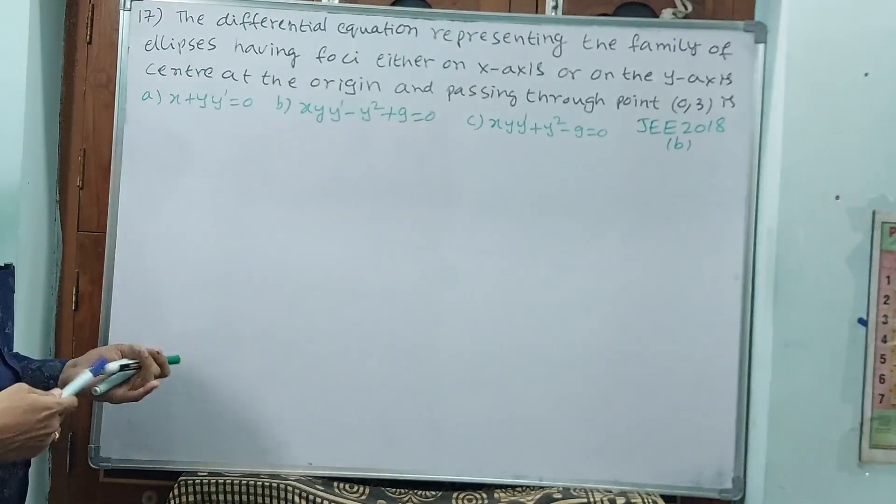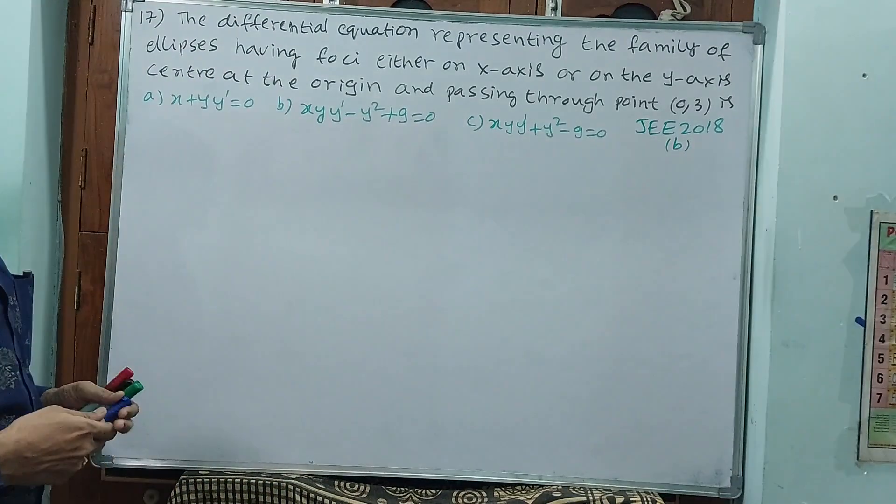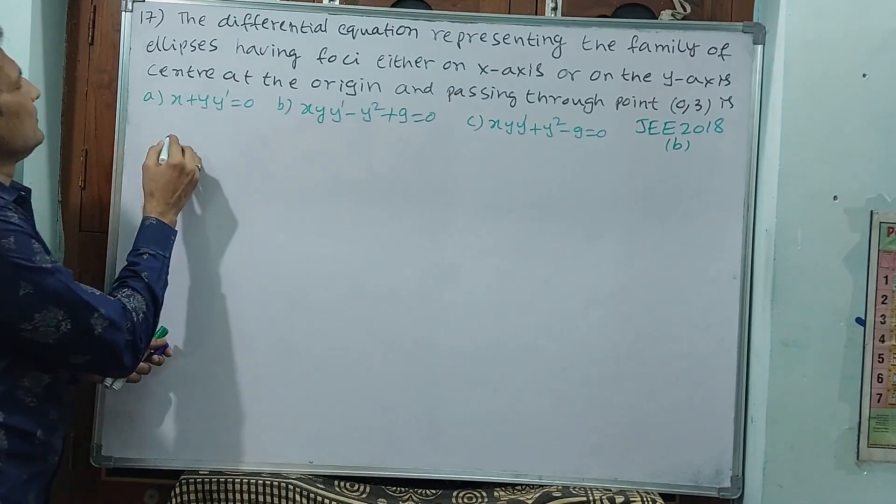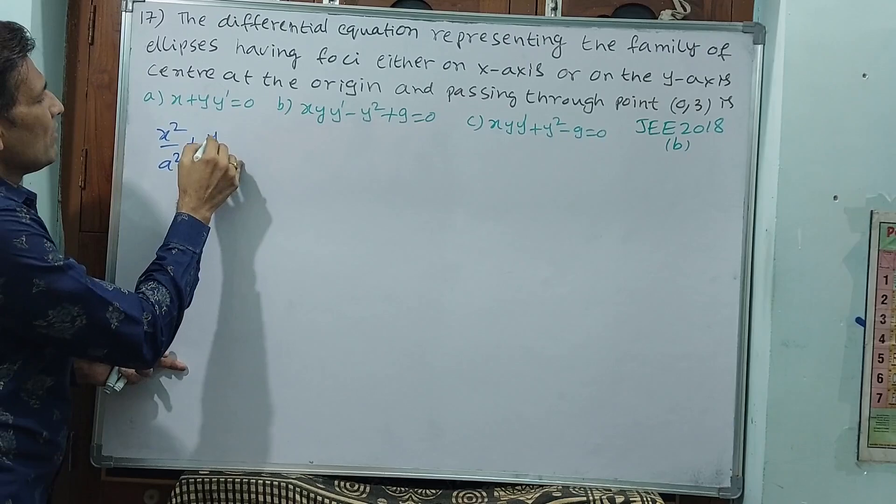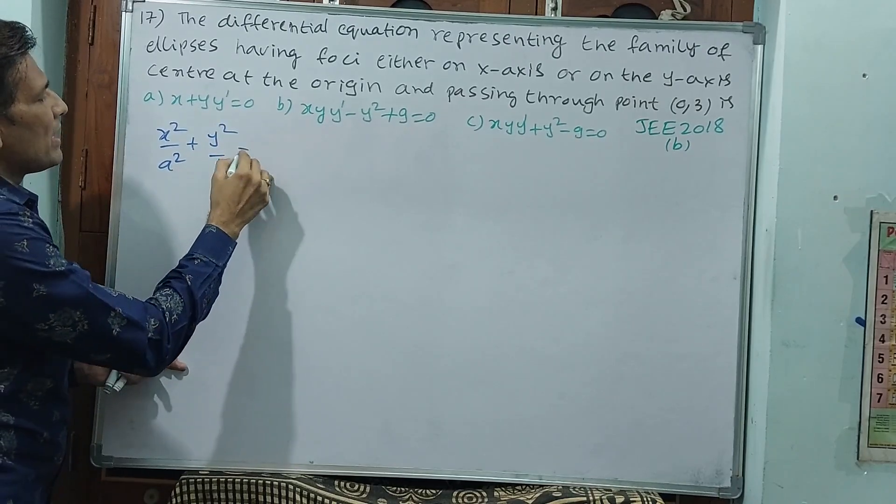Let us see. What is the standard equation of ellipse? x square by a square plus y square by b square is equal to 1.